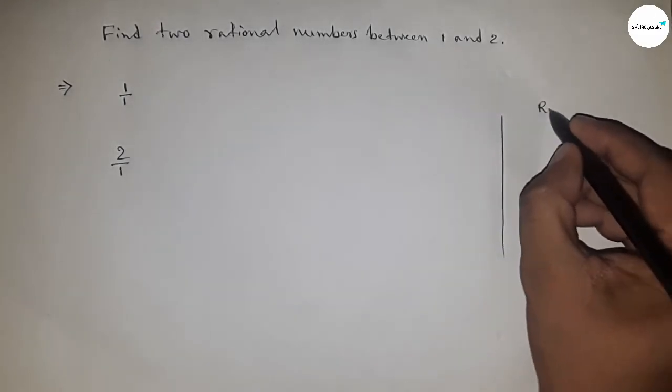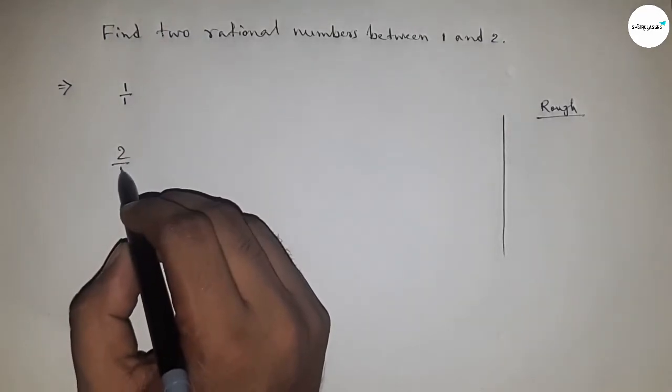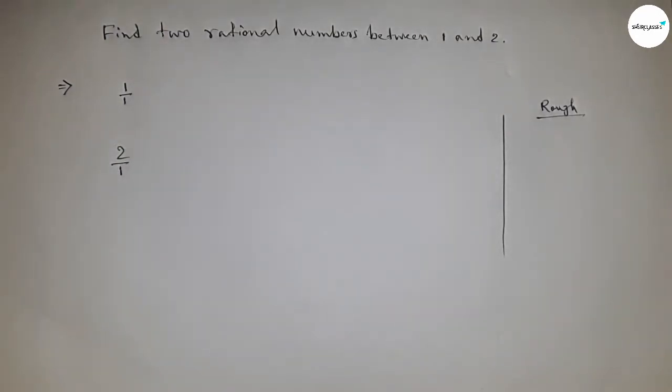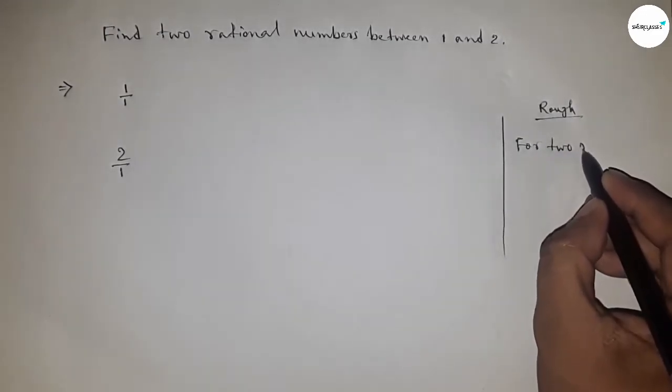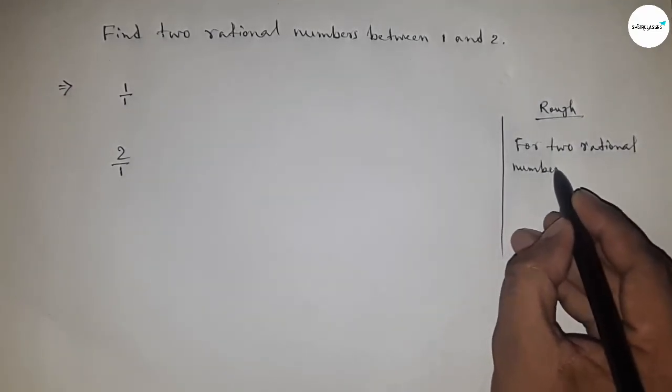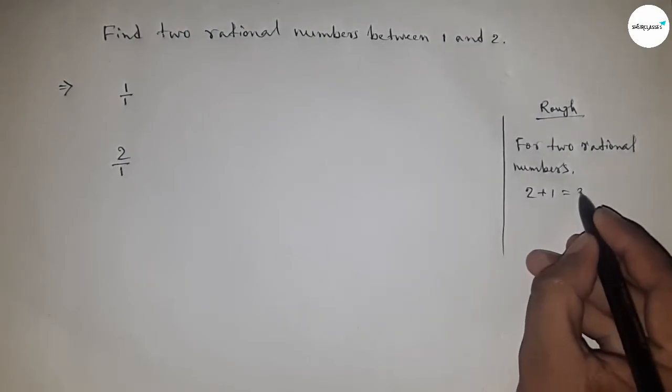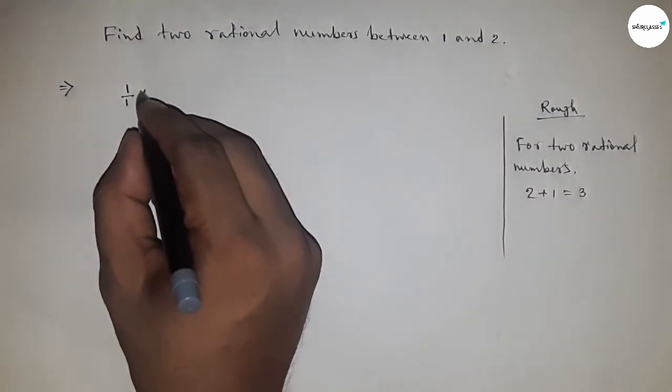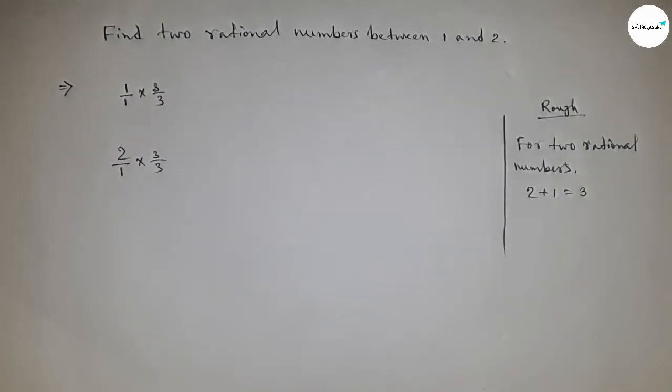Now roughly discussing some calculation. So here the denominator of both are equal. For two rational numbers, we have to multiply by 2 plus 1 equal to 3. So we multiply here 3 upon 3 and here 3 upon 3.